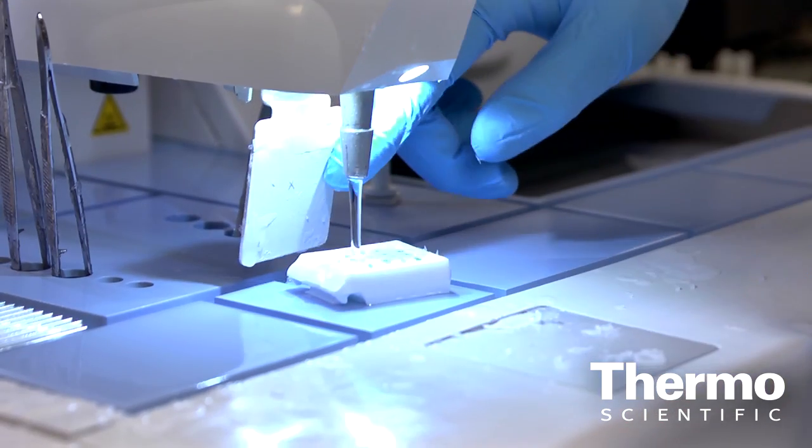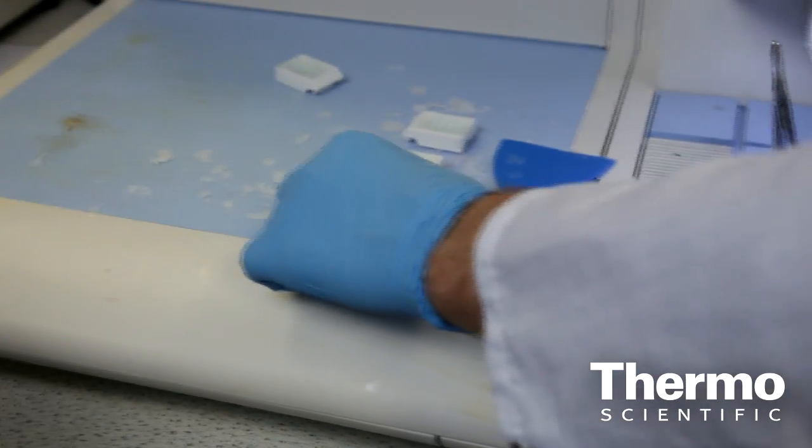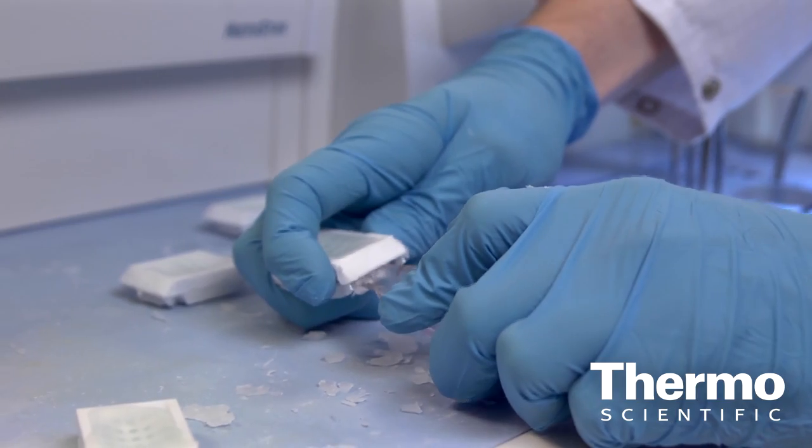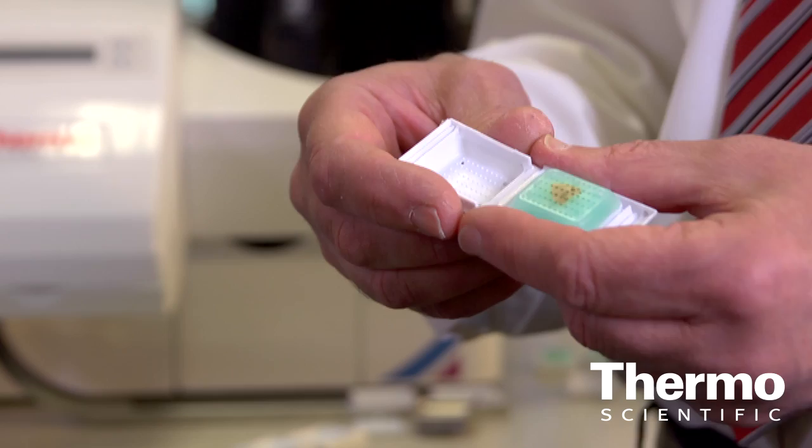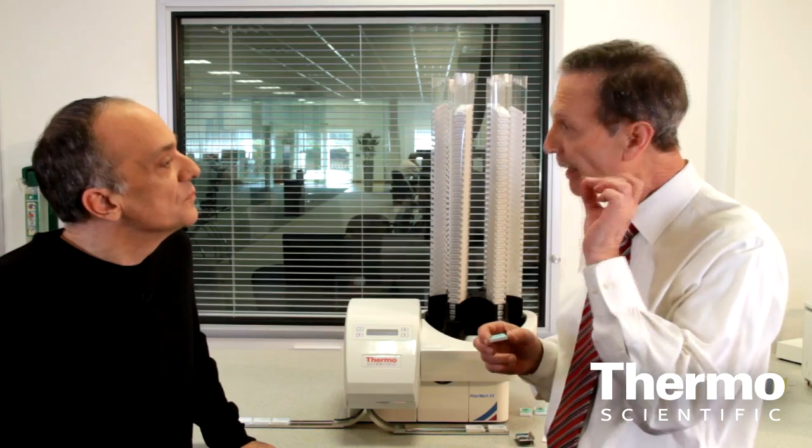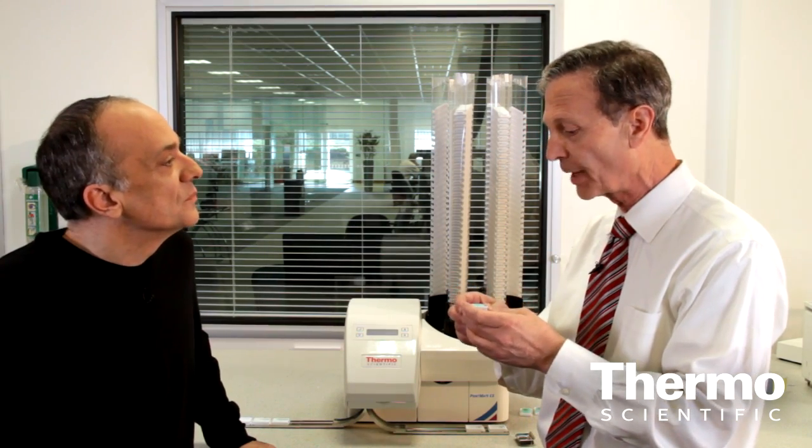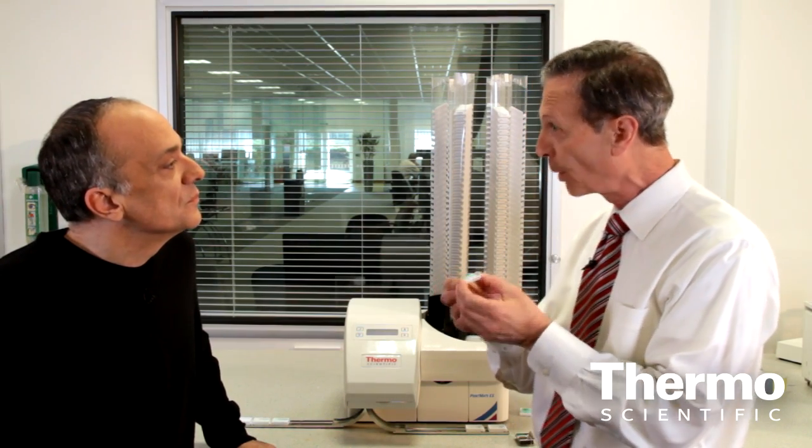Then all the histotechnologist needs to do at embedding is simply fill this cavity with wax, place it on a cold plate to cool and then snap it open and here's one which has been filled. There is your block, get rid of the base mould, you're ready for sectioning. We take 50% of the time out which is huge to any histology laboratory. In addition to that, we've improved quality.